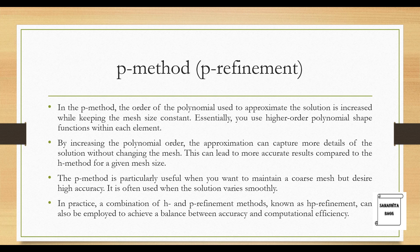In the P method, the order of the polynomial used to approximate the solution is increased while keeping the mesh size constant. So you are not going to change the size of your mesh. It can be coarse itself. Essentially, you use higher order polynomial shape functions within each element. By increasing the polynomial order, the approximation can capture more details of the solution without changing the mesh. This can lead to more accurate results compared to the H method for a given mesh size. The P method is particularly useful when you want to maintain a coarse mesh but desire higher accuracy. It is often used when the solution varies smoothly.